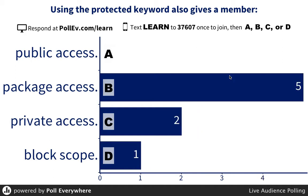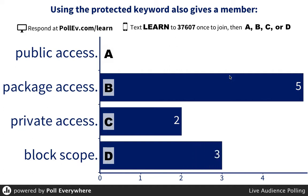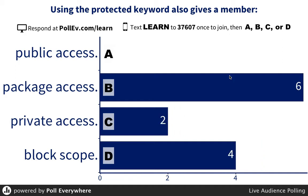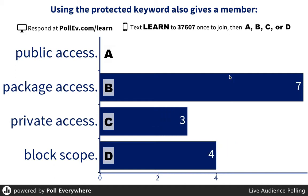Using the protected keyword also gives the member that's protected — what does it give that member? If I use a protected keyword, that access modifier, what does it allow me to do? Not only does it allow me to do certain things, but it also gives another kind of access.